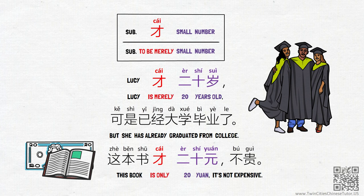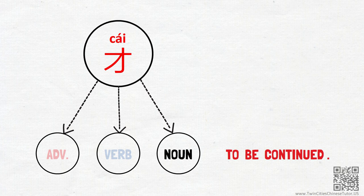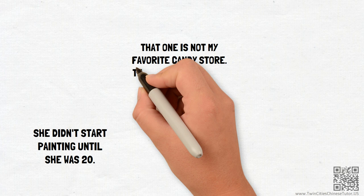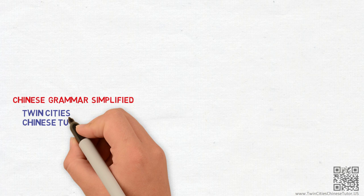Great job! You have finished learning about the ways 才 is used as an adverb and a verb. In the next video, I'll continue to introduce the various meanings 才 has as a noun. See you then! As always, to help you practice, please take a look at the following English sentences and think about how you would say them in Chinese. You can find the answers on my website. If you have any questions about any Chinese grammar point that confuses you, please leave a comment below. For customized Chinese lessons, please reach me at TwinCitiesChineseTutor.us. Thank you for watching!